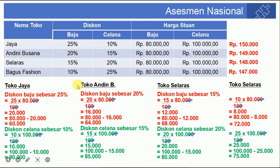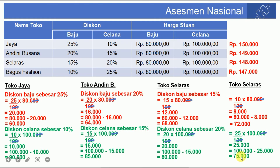Untuk celananya, kita cek: di toko Jaya 90 ribu, toko Andini 85 ribu, toko Selaras 80 ribu, dan toko Bagus Fashion 75 ribu. Berarti Uni membeli celana pergi ke toko Bagus Fashion karena diskonnya paling besar, 25 ribu, sehingga harganya paling murah yaitu 75 ribu setelah dipotong diskon.